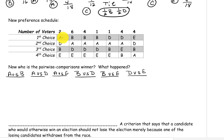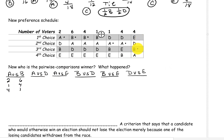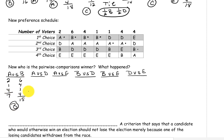On the first two ballots, comparing A and B, A is above B so A will get those two. On the next six, B is above A so B will get the next six. B is above A on the four. B is above A on the one. A is above B on this one. A is above B on this four. And B is above A on the last four. So A has a total of seven and B has a total of 15, and B is the winner of this pairing.